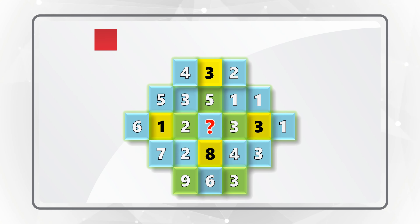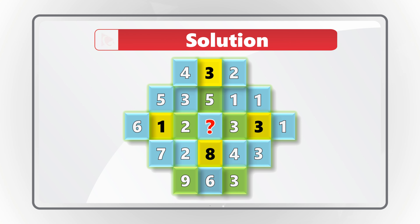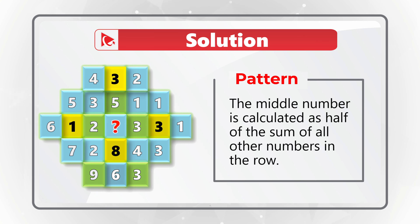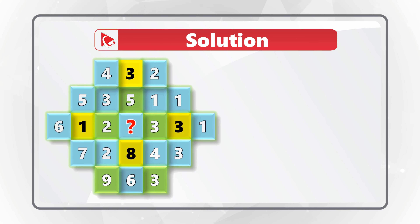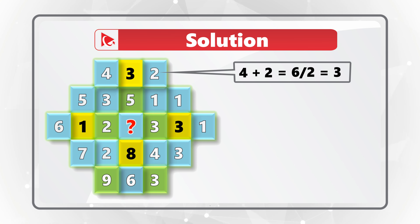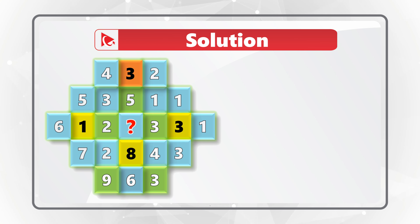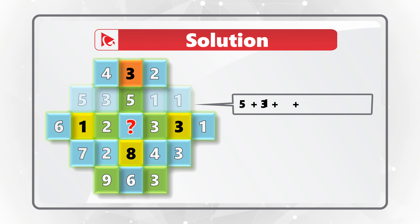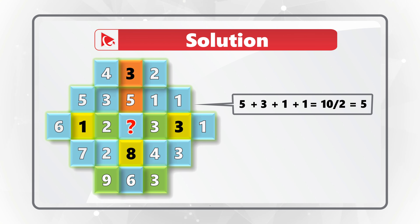Detecting the pattern in this question is tricky but not impossible. Question designers used tricks to confuse you. The correct pattern is that the middle number in each row equals half the sum of the other numbers in that row. In the first row, number 3 in the middle is calculated as 4 plus 2 equals 6, divided by 2 equals 3. In the second row: 5 plus 3 plus 1 plus 1 equals 10, and 10 divided by 2 equals 5.